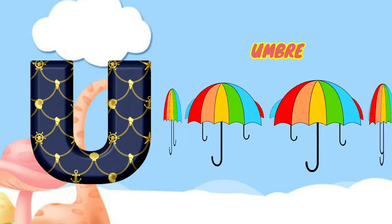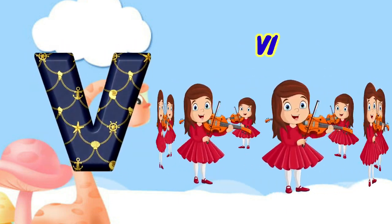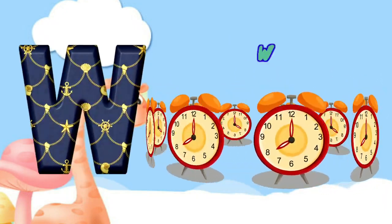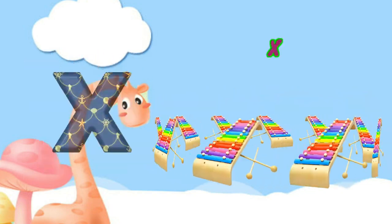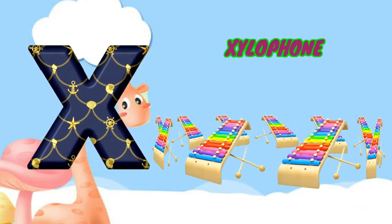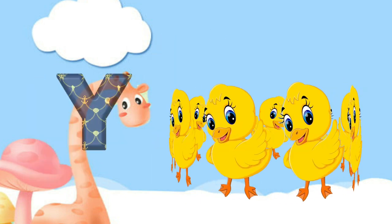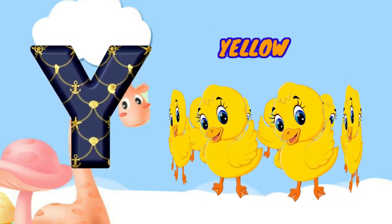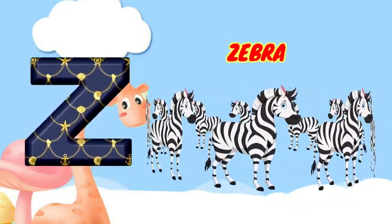U is for umbrella, u-u-umbrella. V is for violin, v-v-violin. W is for watch, w-w-watch. X is for xylophone, x-x-xylophone. Y is for yellow, ye-ye-yellow. Z is for zebra, z-z-zebra.